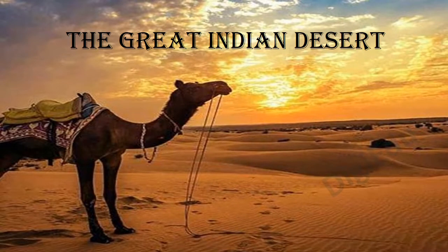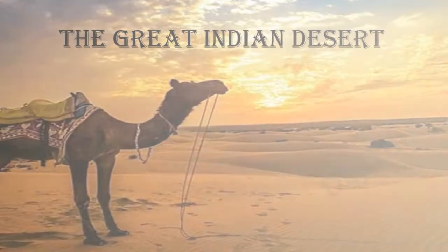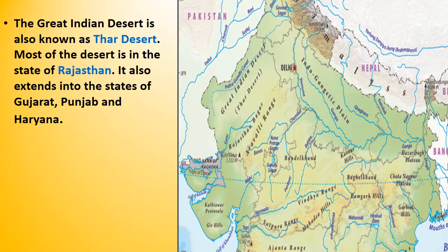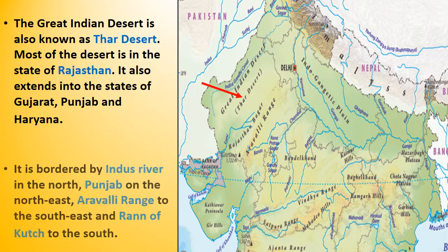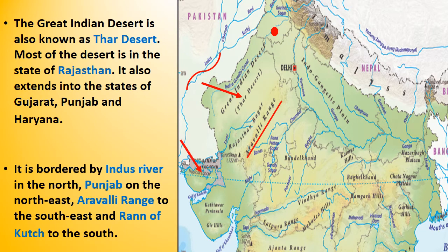The Great Indian Desert is also known as the Thar Desert. Most of the desert is in the state of Rajasthan. It also extends into the states of Gujarat, Punjab and Haryana. It is bordered by the Indira River in the north, Punjab on the northeast, Aravalli Range to the southeast, and Rann of Kutch to the south.